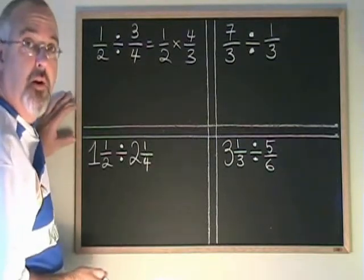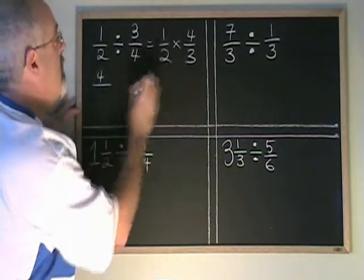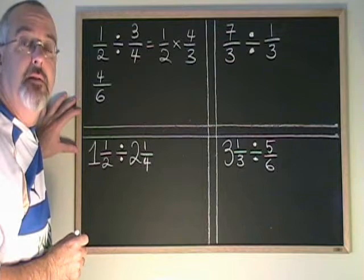Now since we already know how to multiply, this is easy. 1 times 4 is 4. 2 times 3 is 6. And all that's left is to give our answer in its most simplified form.